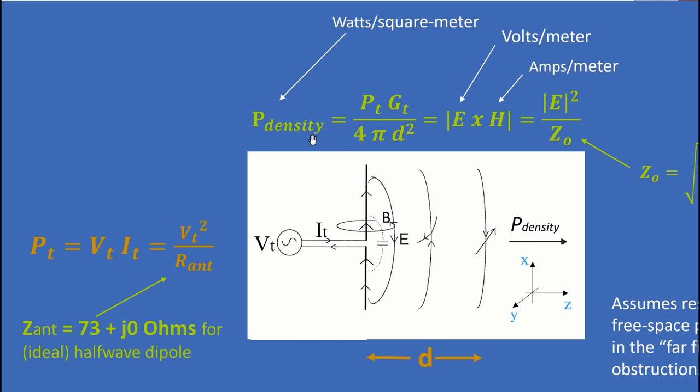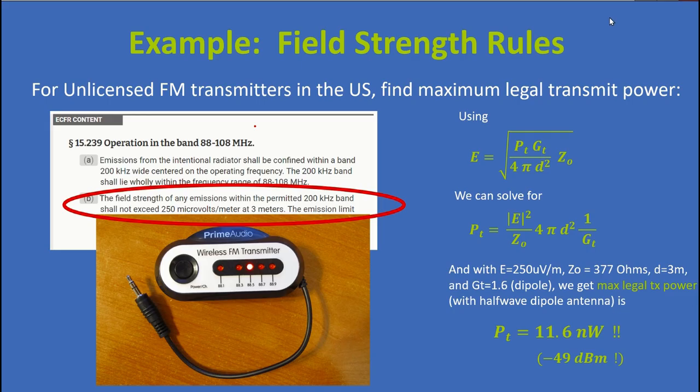And in the fields domain, it's power density in watts per square meter. And it's E squared over Z naught. So we're going to concentrate on results like those that will allow us to do things. For example, look at field strength rules and figure out how much power a transmitter can put out and not violate rules.